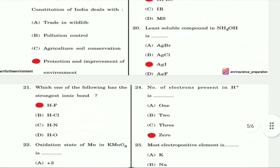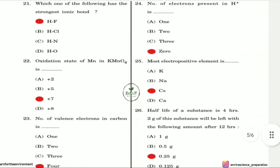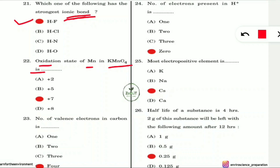Question 21: Which one of the following has the strongest ionic bond? The strongest ionic bond is between H and F (hydrogen and fluorine). Fluorine is highly electronegative, so it forms the strongest bond with hydrogen.